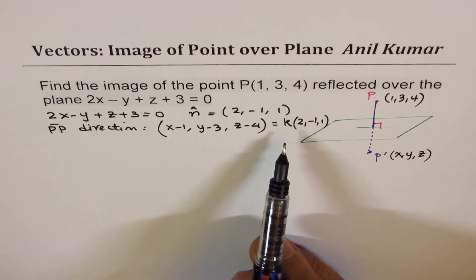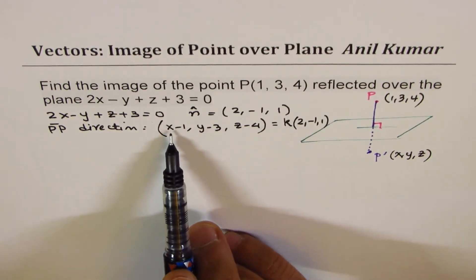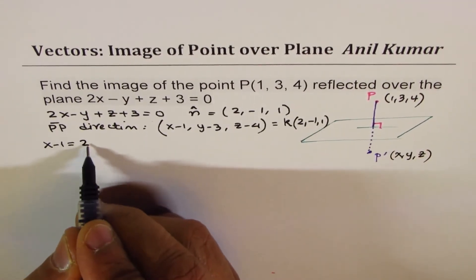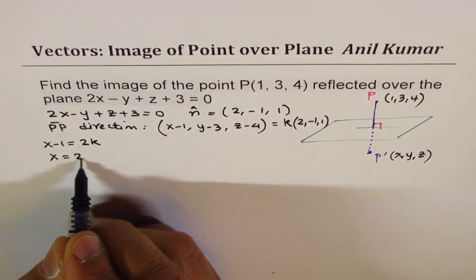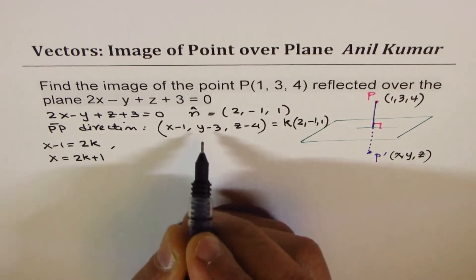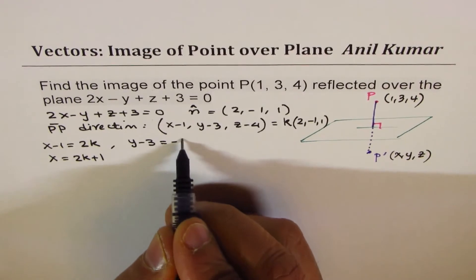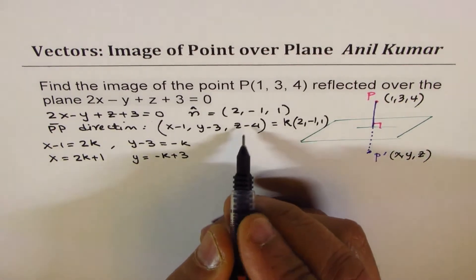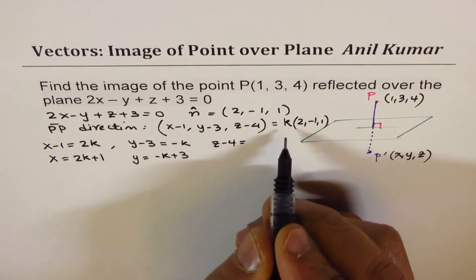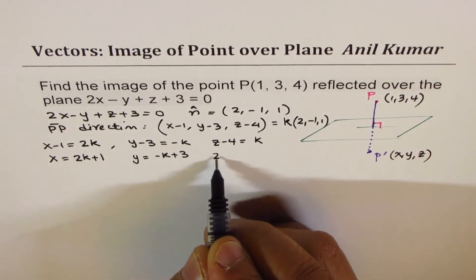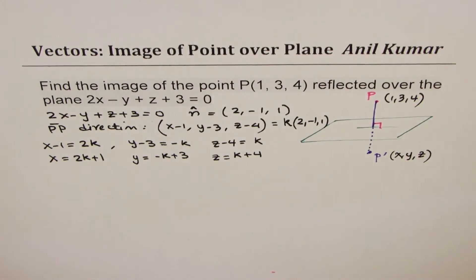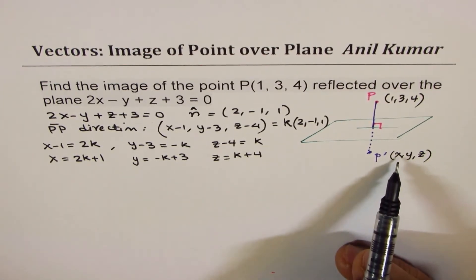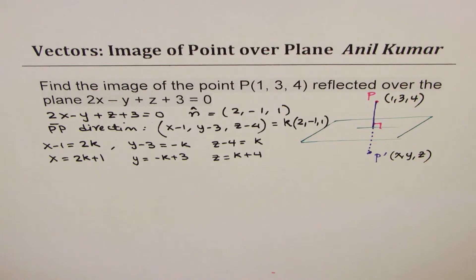From this we can get the general values of x, y, and z. We have: x minus 1 equals 2k, so x equals 2k plus 1; y minus 3 equals minus k, so y equals minus k plus 3; and z minus 4 equals k, so z equals k plus 4. This gives us a relation connecting each coordinate with the scalar factor k.